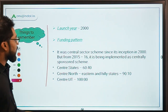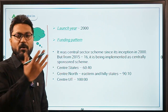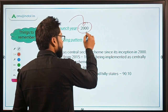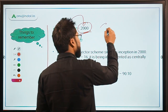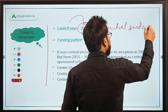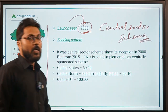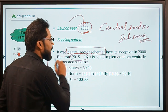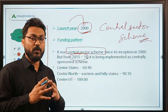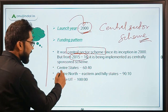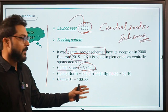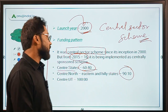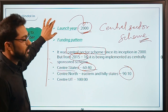The scheme was launched in the year 2000 — this is a very famous scheme and you should already know the launch year. At launch it was a Central Sector Scheme, but it was later converted to a Centrally Sponsored Scheme. Since 2015-16, the funding ratio between center and state is 60:40, for northeastern and hilly states it is 90:10, and for Union Territories it is 100% funded by the central government.